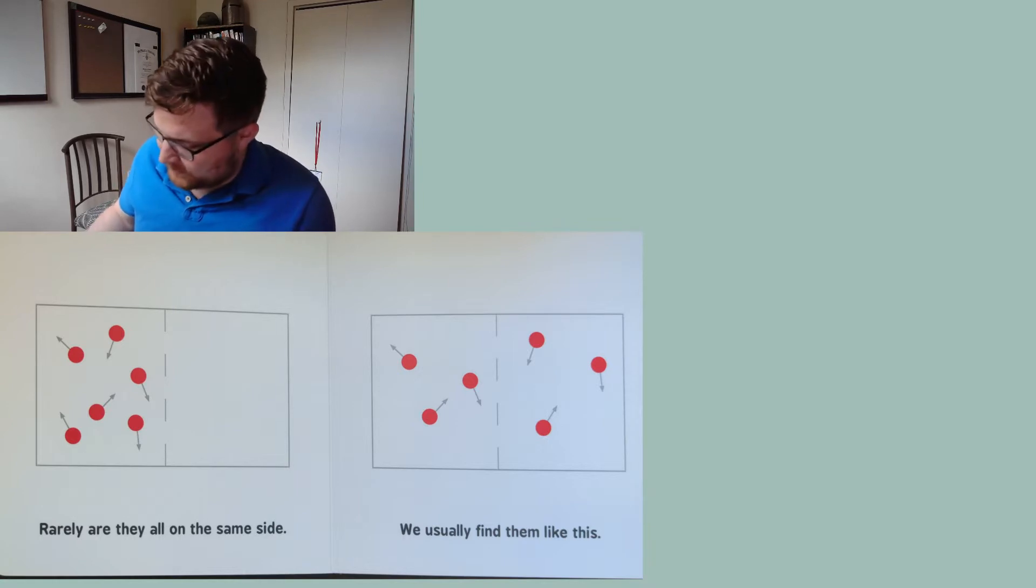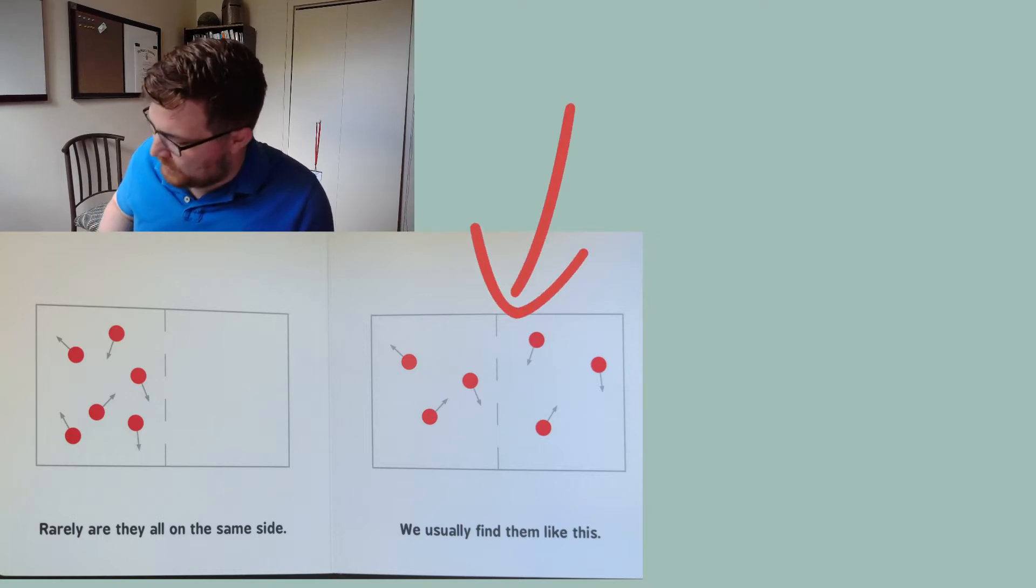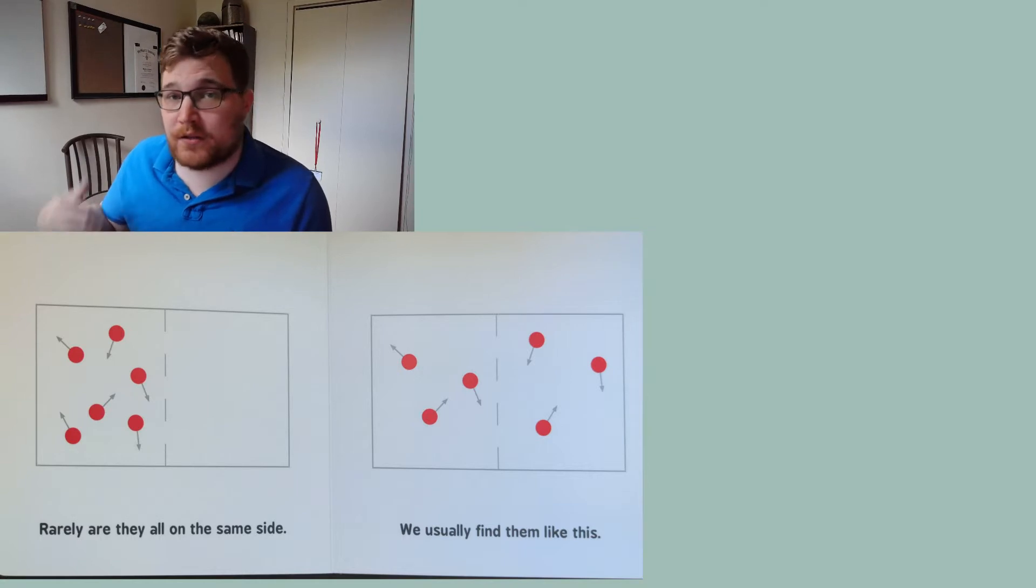And sometimes there are more on the right, so another atypical configuration. So very rarely are they on the same side, which makes sense. You'd expect them to be distributed roughly evenly in space. We usually find them like this. If we have six balls and we're only tracking how many are on the left and how many on the right, we would expect on average that this picture right here would be the correct one.